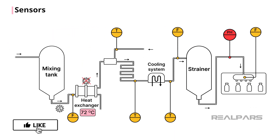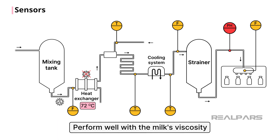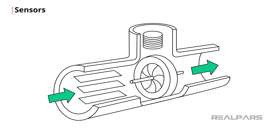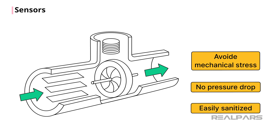To measure flow rates, turbine or electromagnetic flow meters are used, since they are able to perform well considering the viscous nature of the milk. Because these flow meters do not cause large restrictions in the pipe, they do not cause undue mechanical stresses on the structure of the milk fats and proteins. Turbine and electromagnetic flow meters have virtually no pressure drop and are easily sanitized.